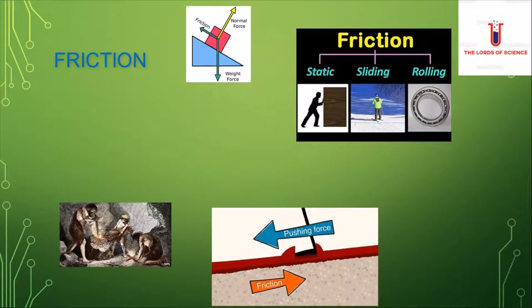First up is friction. Friction opposes movement. As you can see over here, the weight force is pulling this box down the ramp, and the friction is preventing it from going down.